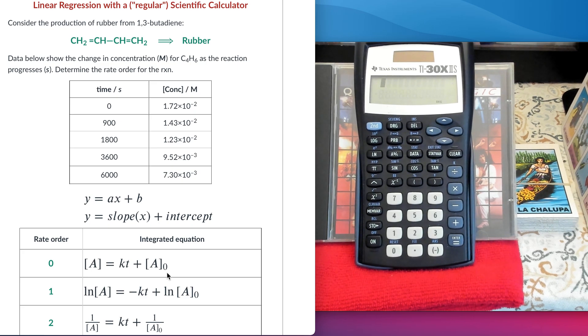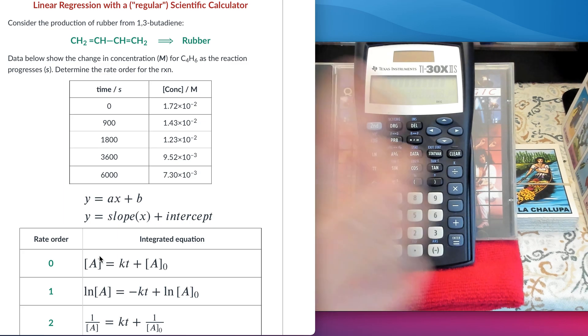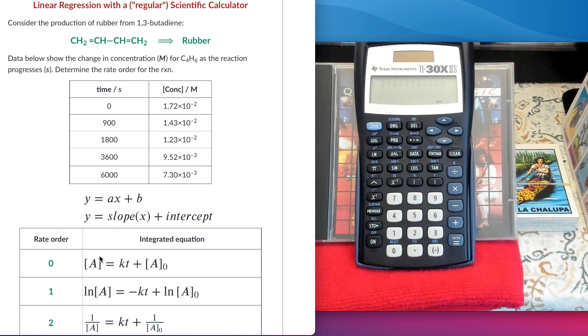We're ready to enter the data. Another thing that I want to mention is that in this case, for these particular types of problems, we actually have to do three linear regressions. And then we have to compare the value of the correlation coefficient, r square. I'm going to show you how to do that with the calculator. We are going to compare that value because the one that gets closest to one, that is the indication that your data fits that model better.